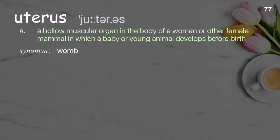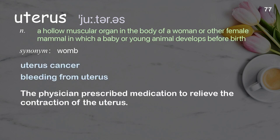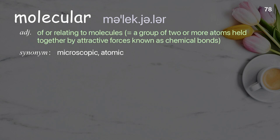Uterus: a hollow muscular organ in the body of a woman or other female mammal in which a baby or young animal develops before birth.